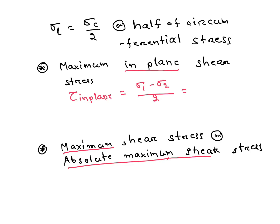Here, the major principal stress Sigma 1 is Sigma C, and the minor principal stress Sigma 2 is Sigma L. Maximum in-plane shear stress Tau = (Sigma 1 - Sigma 2) / 2 = (PD/2T - PD/4T) / 2, which gives PD by 8T.